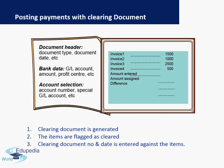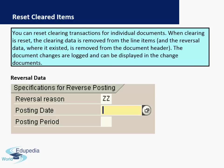When posting payments with a clearing document, a clearing document is generated, the items are flagged as cleared, and a clearing document number and date are entered against the items. There can also be cases when you want to reset a cleared item. When clearing is reset, the clearing data is removed from the line items, and any reversal data where it existed is removed from the document header. The document changes are logged and can be displayed in the change documents — this is a very important SAP feature that gives you a tracking mechanism for who made changes to any document and on what date and time.